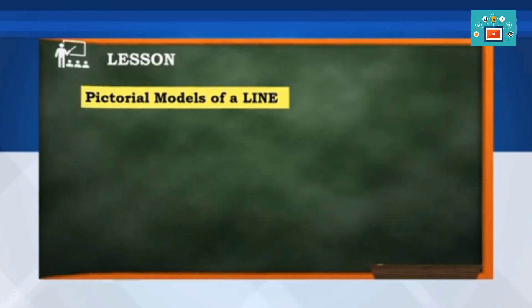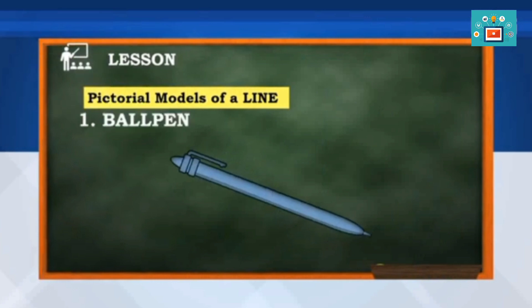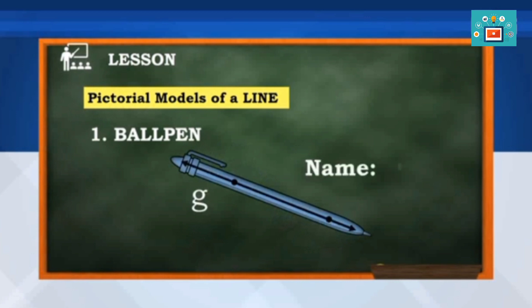A ball pen is an example of a pictorial model of a line. Given two points, we can draw a line. And this line can be named as line G.